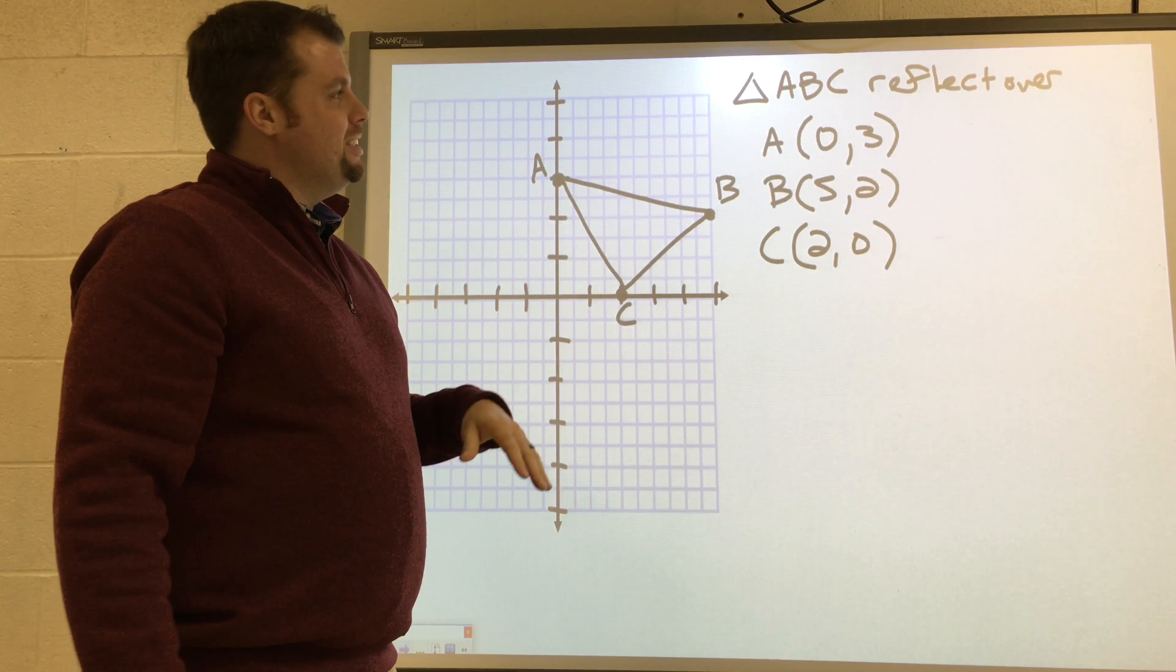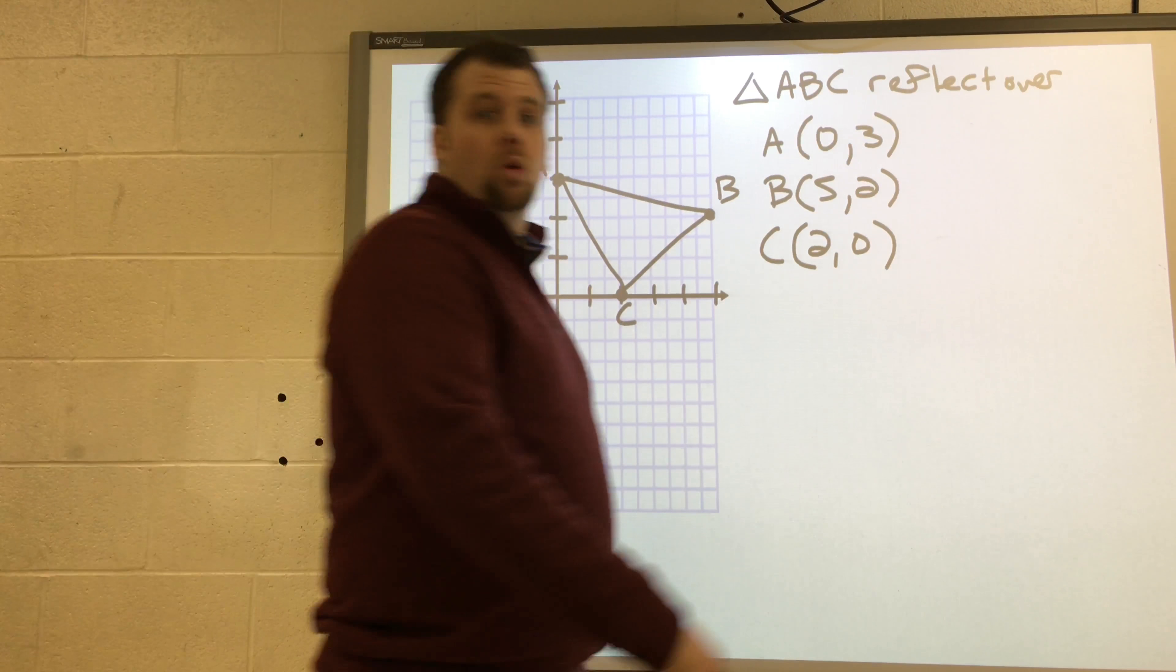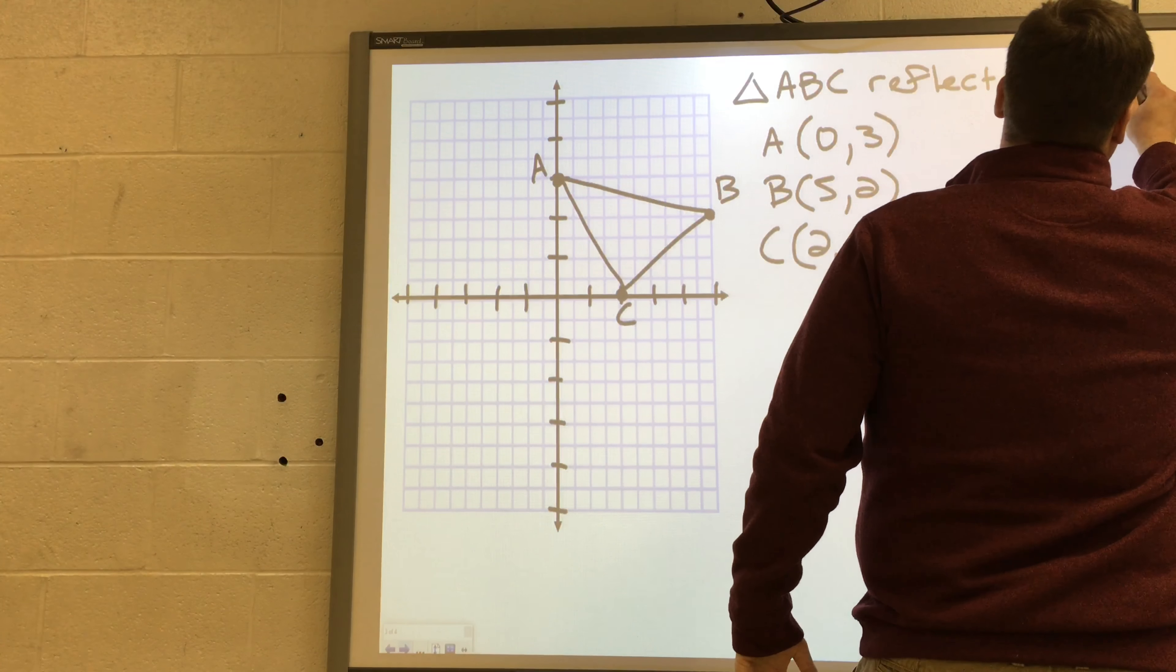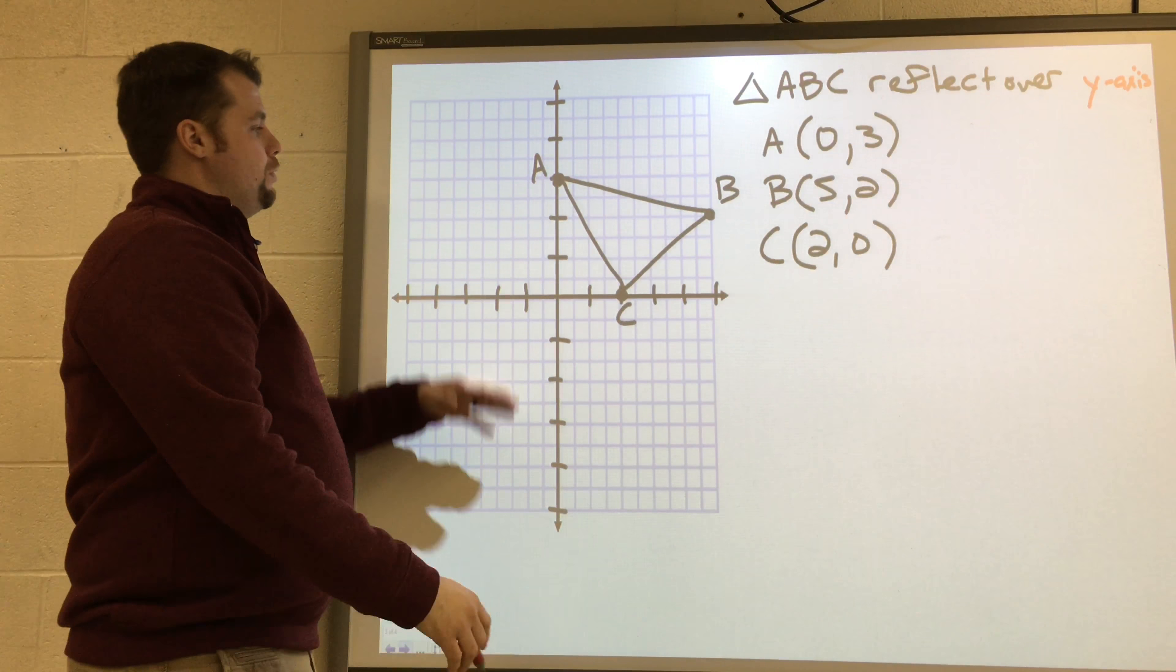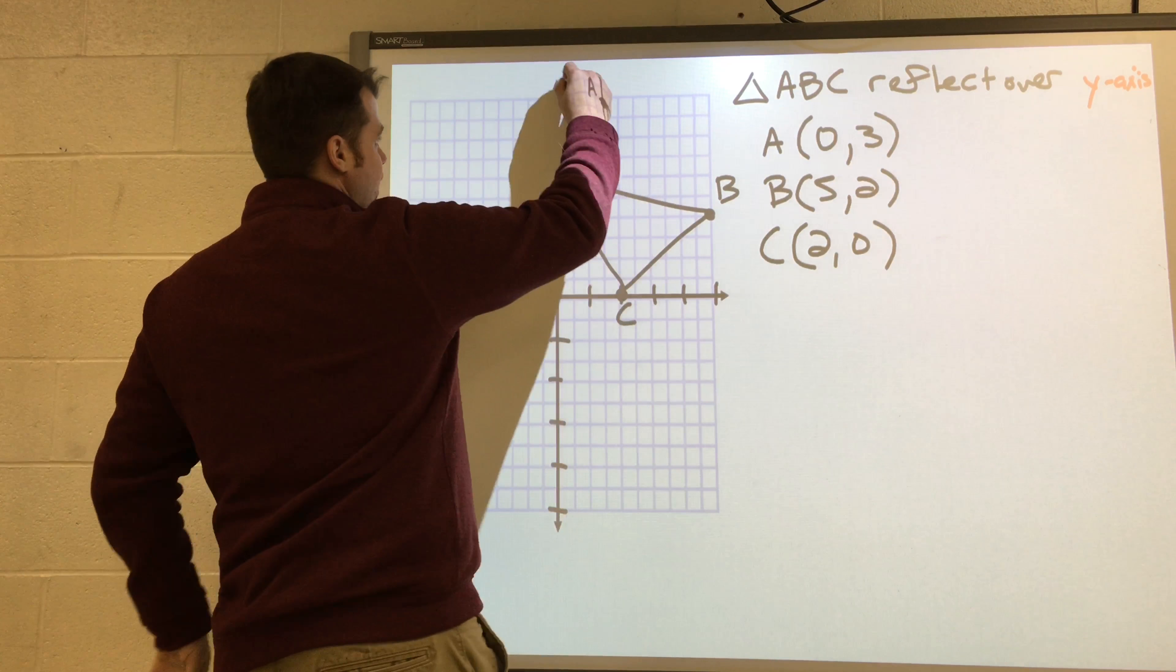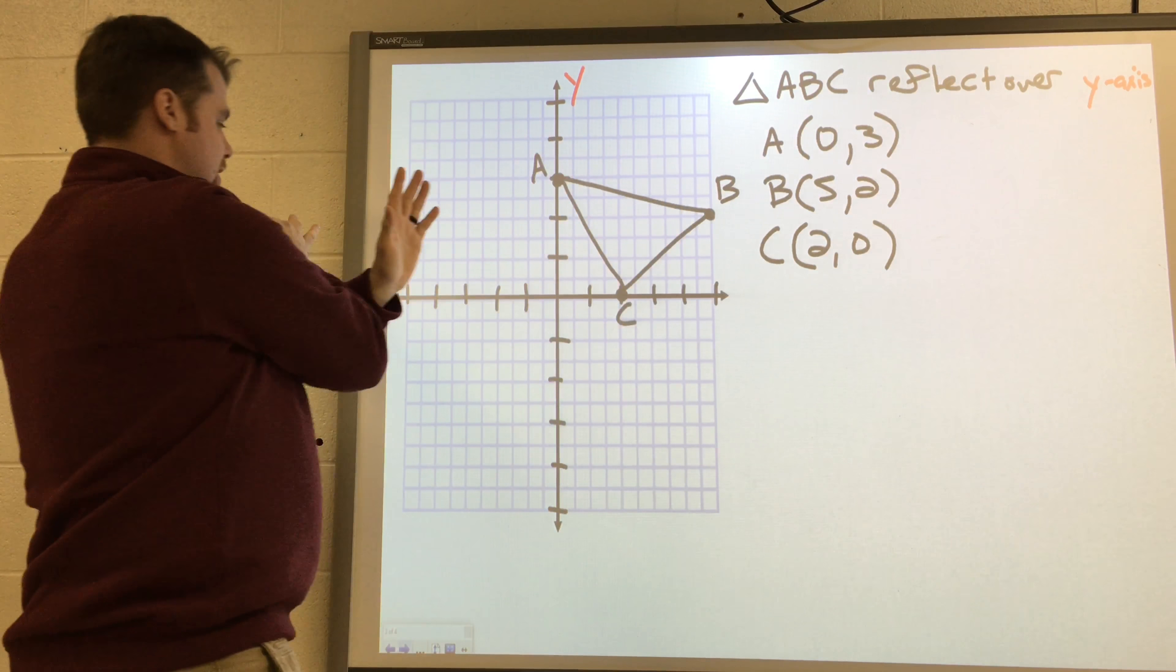So now we have triangle ABC again, and we're going to reflect it over the y-axis this time. So instead of the x-axis here, I'm going to use the y-axis. So I'm going to flip it this way.